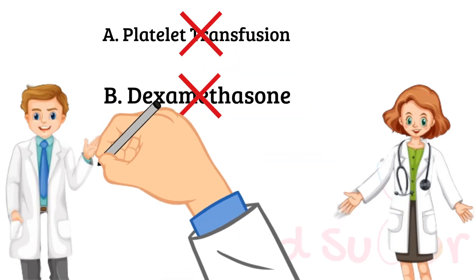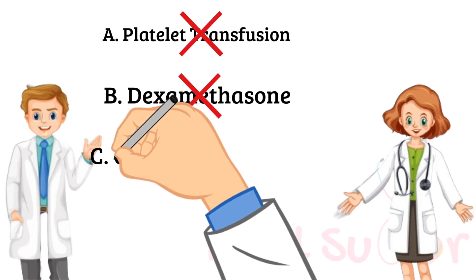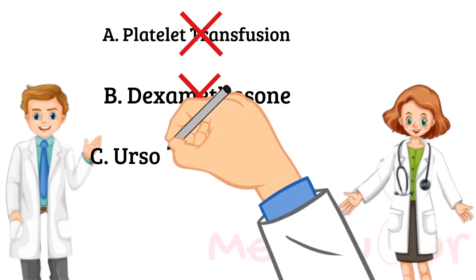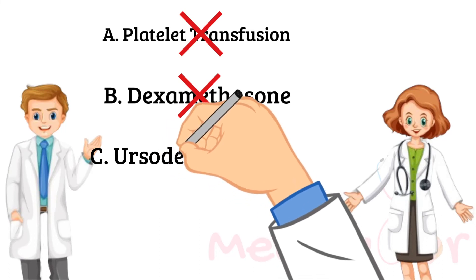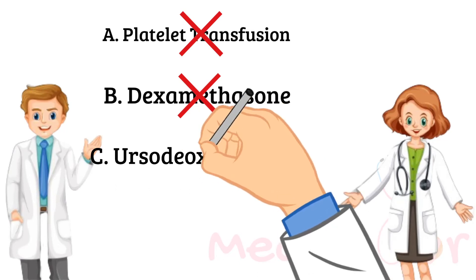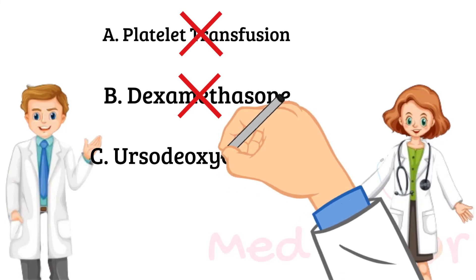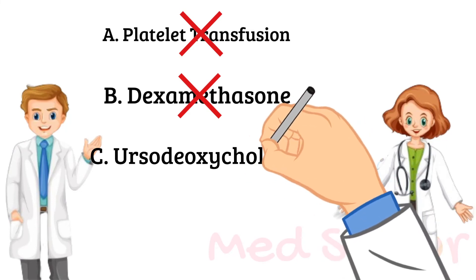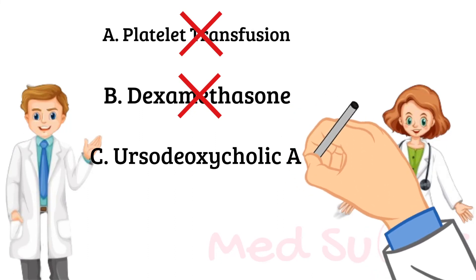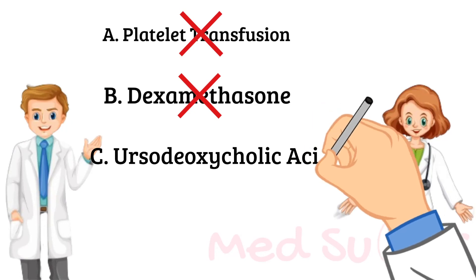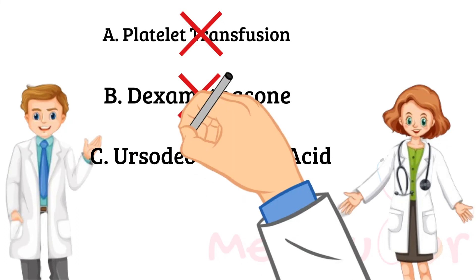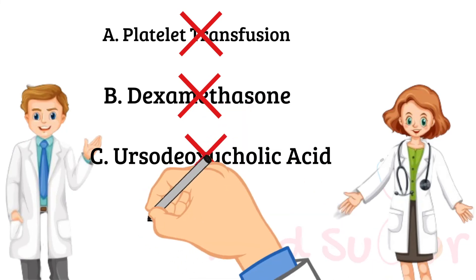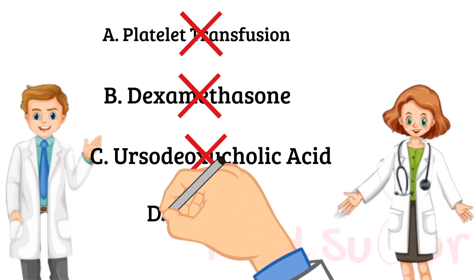Ursodeoxycholic acid — this is a bile acid usually given in conditions of intrahepatic cholestasis of pregnancy. But with intrahepatic cholestasis of pregnancy, there is no hemolysis — essentially it's only cholestasis. There is some elevation of liver enzymes and elevated bilirubin, however it's not an emergency condition requiring immediate delivery. We give ursodeoxycholic acid to improve absorption of fat and act like bile acids, since this woman cannot excrete bile into her intestines. This is not the treatment here — this woman has HELLP syndrome, not intrahepatic cholestasis of pregnancy.